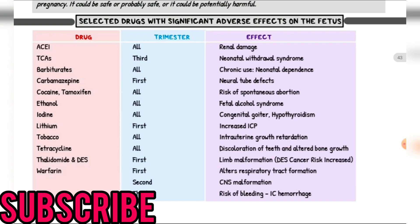Tobacco: all trimesters — intrauterine growth restriction. Tetracycline: all trimesters — discoloration of teeth and altered bone growth. Thalidomide and DES: first trimester — limb malformation; DES — increased cancer risk.